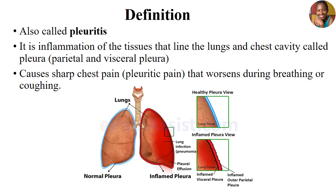Let's begin by defining this disease. Pleurisy, also called pleuritis, is an inflammation of the tissues that line the lungs and the chest cavity — what we usually call the pleura. The pleura has two sides: it contains the parietal and the visceral pleura.